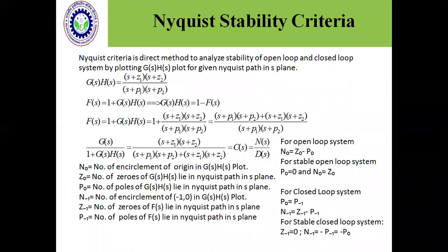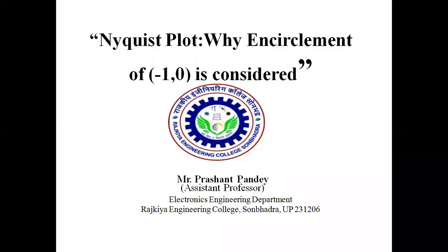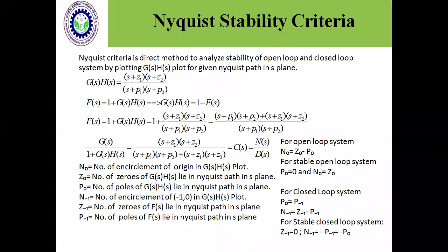In the Nyquist plot, we see the encirclement of origin as well as minus 1,0. Why do we see the encirclement of origin as well? First of all, I have discussed the Nyquist stability criteria in the previous video lecture. If you want, you can refer to it.